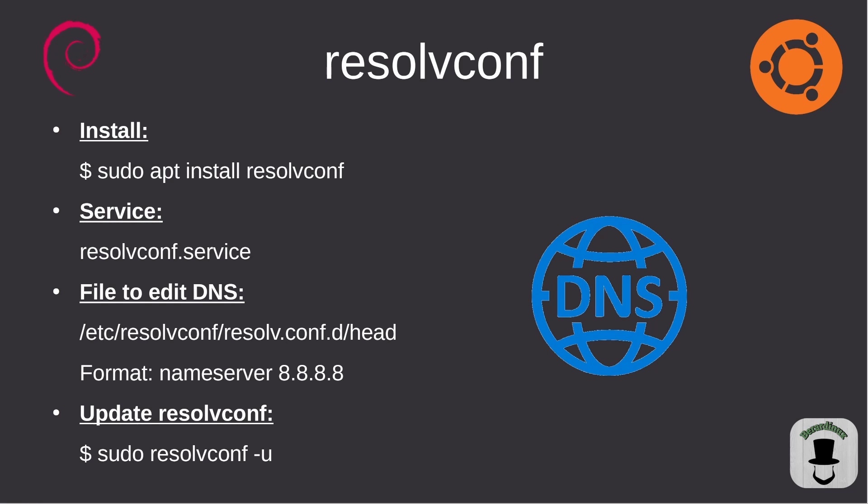resolveconf is going to be relatively easy. Some systems are going to have it by default — for instance, my Ubuntu Server 20.04 already had it installed. But there are going to be a lot of systems where you'll have to install it. The package is called resolveconf, so you're just going to do sudo apt install resolveconf. The service name is going to be resolveconf.service. The file you need to actually edit to change your DNS is going to be /etc/resolveconf/resolveconf.d/head. The format you're going to put inside of there is just nameserver and then the IPv4 address of the domain name server — for instance, Google's 8.8.8.8. To actually update resolveconf, you're going to do sudo resolvconf -u.